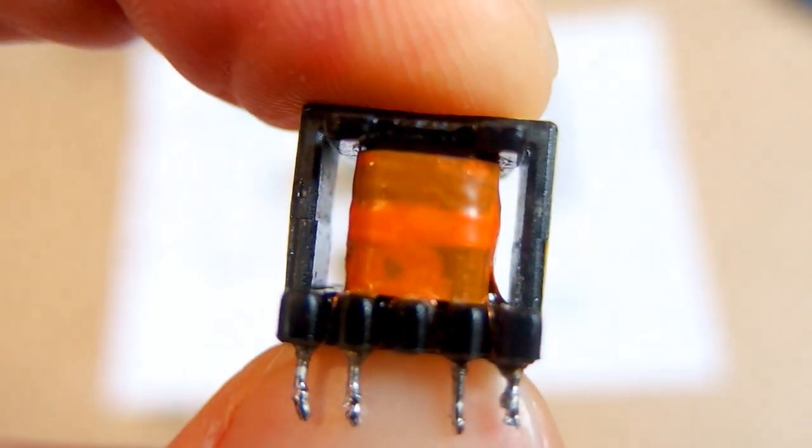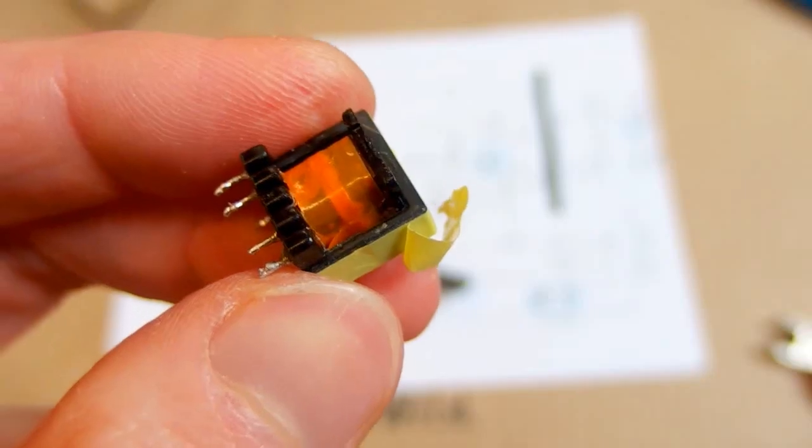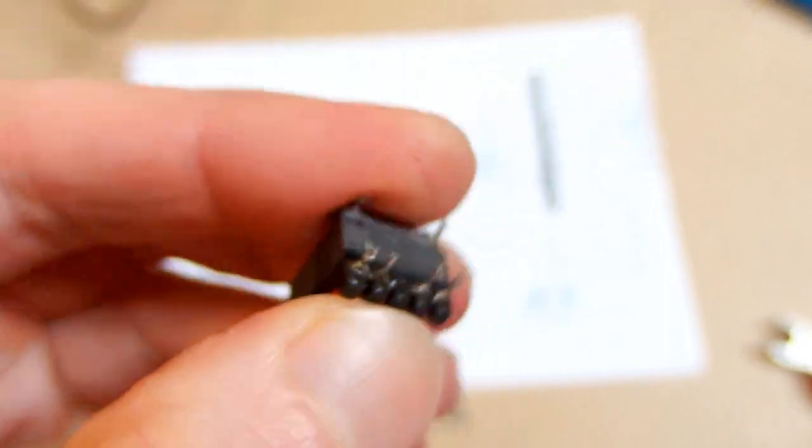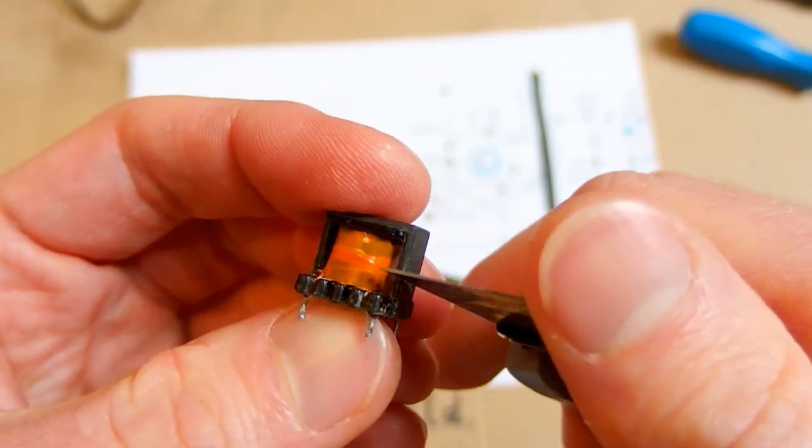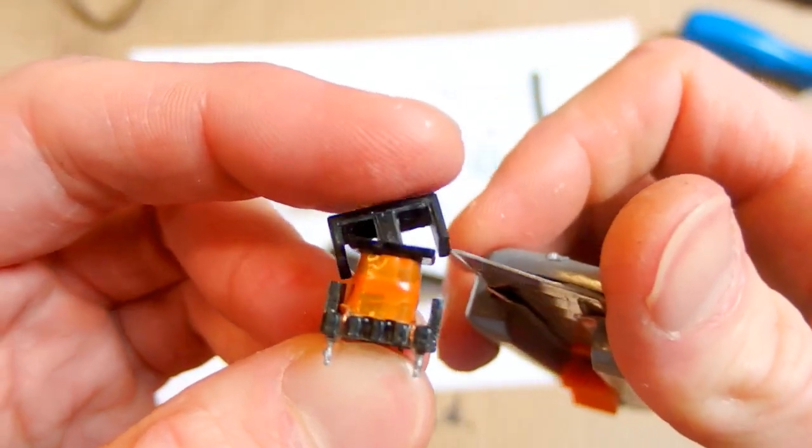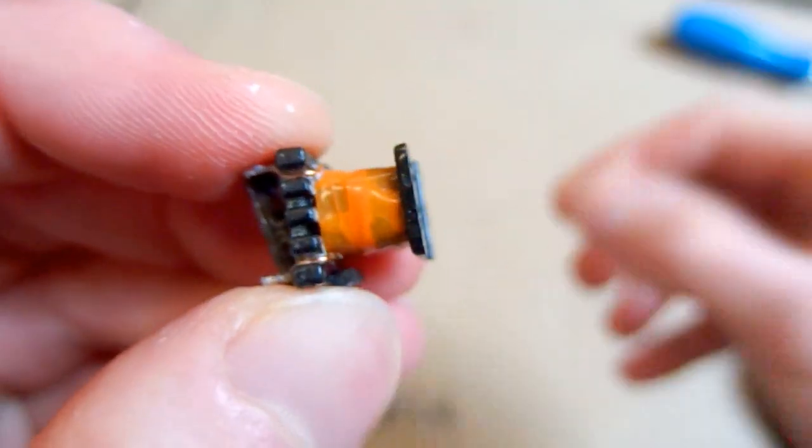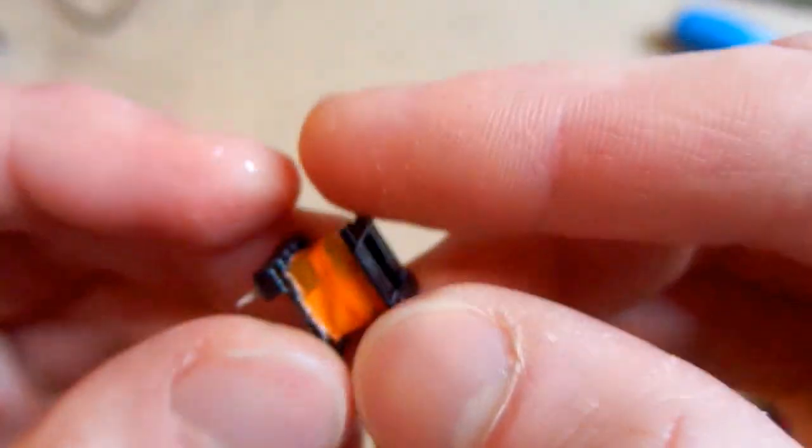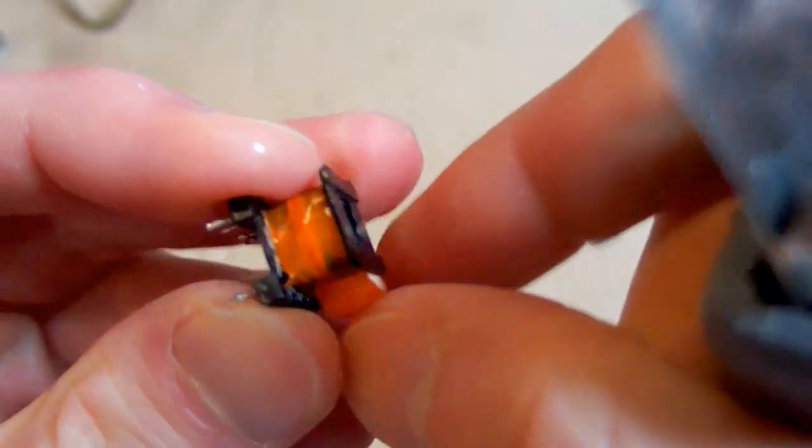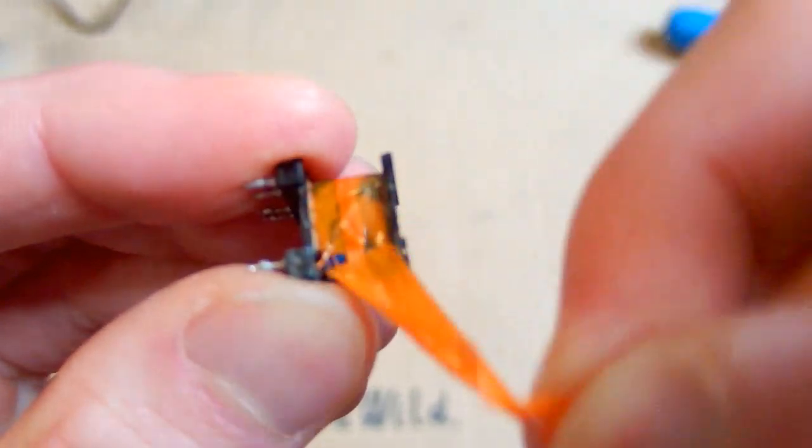Most of the space in it seems empty. Let's try to open it. It actually opens without any cracking, just using a knife like this. So on the top there is probably the auxiliary winding under some tape. Let's remove the tape from it.